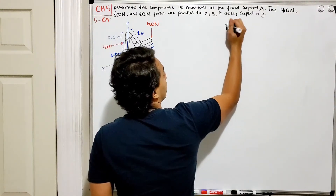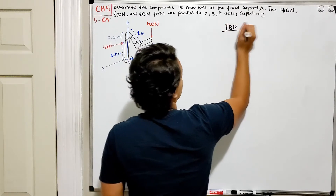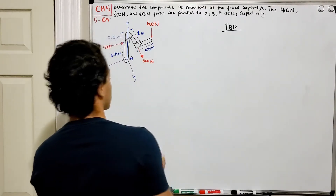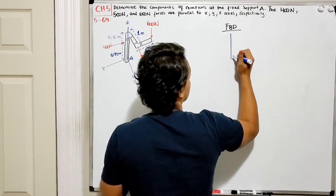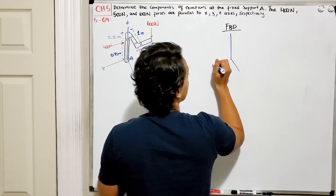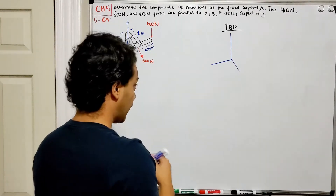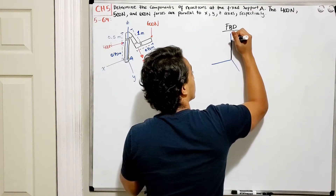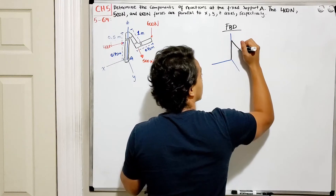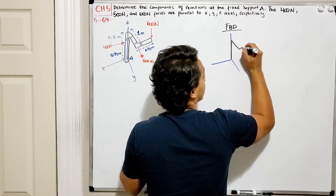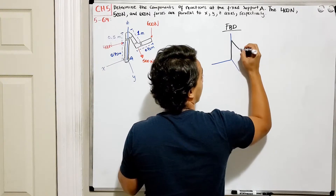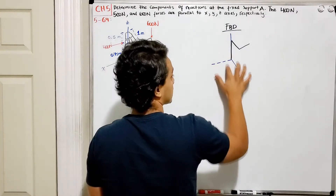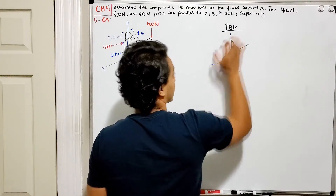So we're going to have a free body diagram. First, I'm going to draw my X, Y, and Z axes. My tube goes up, then it turns along the Y direction, and then it goes in the X direction — so it has this shape. We now have the X, Y, and Z partition drawn.